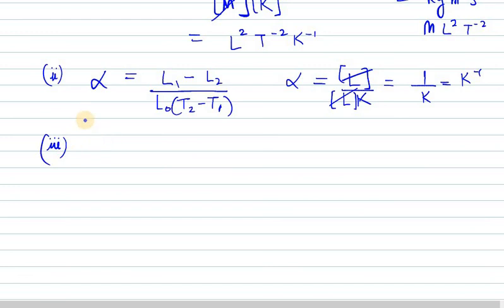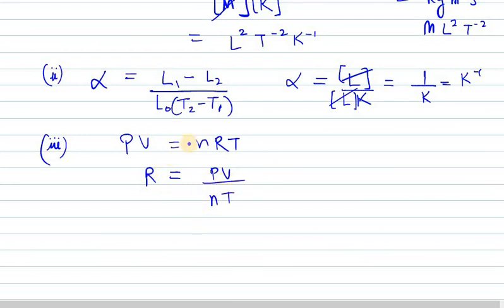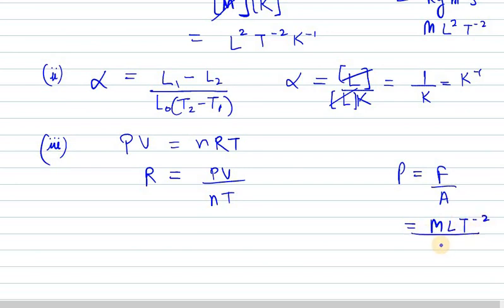Now the third one is gas constant R. The ideal gas equation is PV = nRT, so using cross multiplication we get R = PV / (nT). Pressure has dimension force over area. Force is mass times acceleration, so M·L·T⁻², and area is L². Cancelling one L, we get M·L⁻¹·T⁻² for the dimension of pressure.